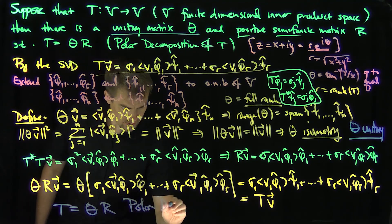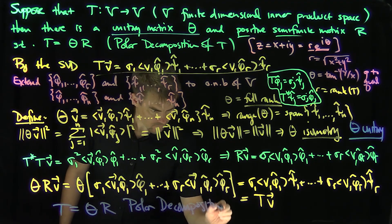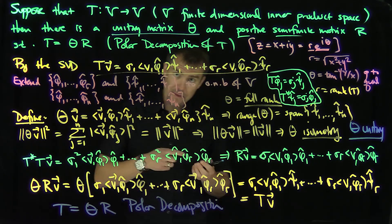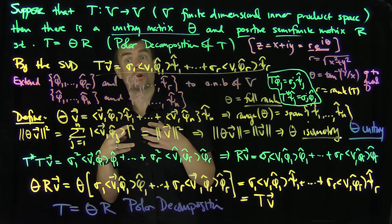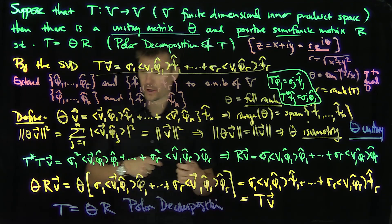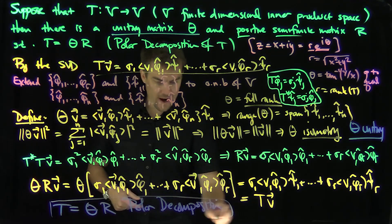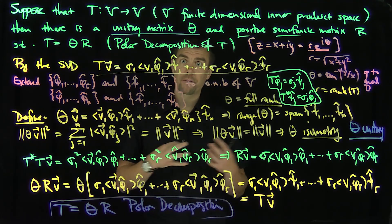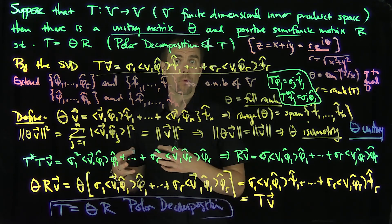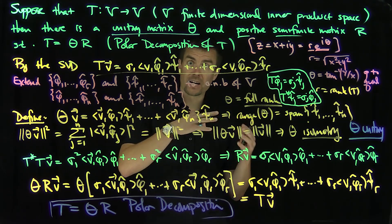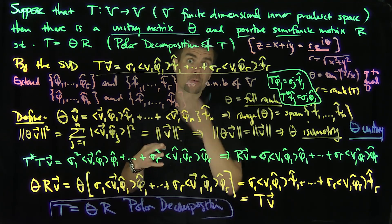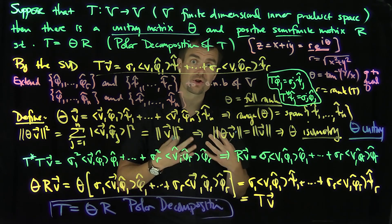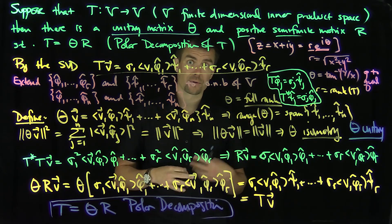Notice how the decomposition respects the rank: R extracts the rank information, and θ captures the rotational aspect of what the operator is doing. This polar decomposition comes directly as a consequence of the singular value decomposition, from which many other factorizations in this course also follow. We can exploit the fact that the SVD is valid for maps between inner product spaces V and W of different dimensions; when V = W, extra structure emerges, and this is a good illustration of how the SVD constructs different factorizations.